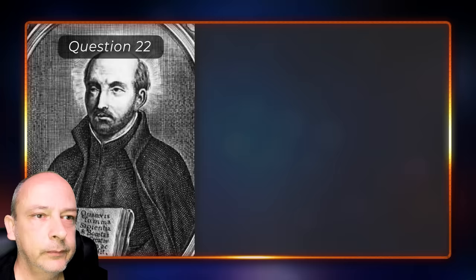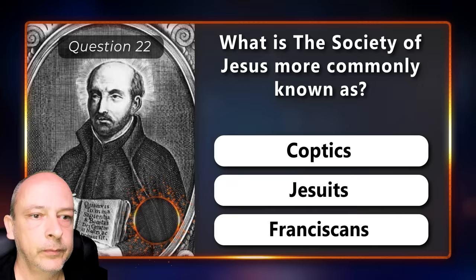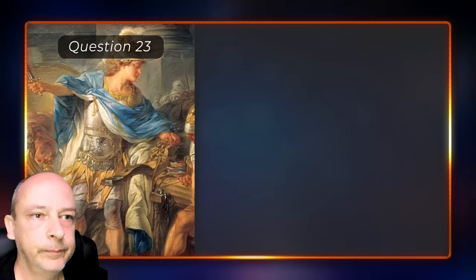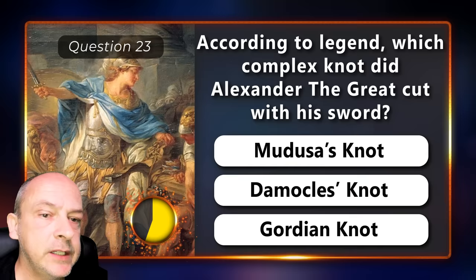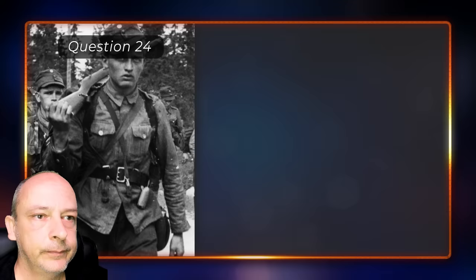What is the Society of Jesus more commonly known as? Coptics, Jesuits, or Franciscans? They are called Jesuits. According to legend, which complex knot did Alexander the Great cut with his sword? Medusa's knot, Democles's knot, or the Gordian knot? The Gordian knot.